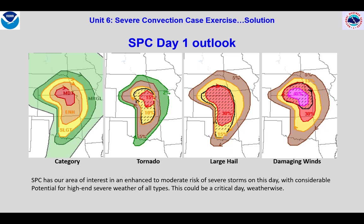Our case exercise focused on a severe weather day in the Central Plains. Our focus area was the eastern half of Kansas, which had an enhanced to moderate risk forecast for high impact hazards of all types, so we're looking at potential for a significant severe weather event.